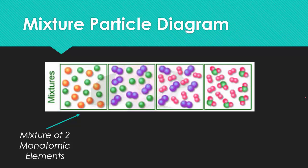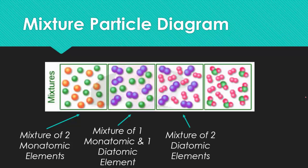Then you go on to the next one, you see that it is a mixture of a monatomic atom and one diatomic element. The next one would be a mixture of two diatomic elements, and then the last is a mixture of the diatomic elements and compounds.